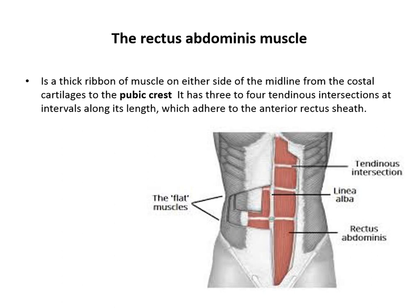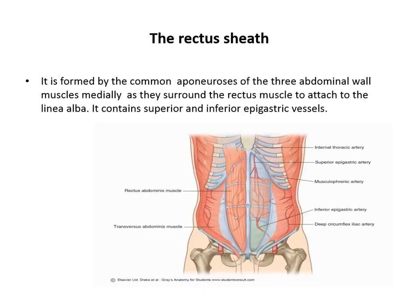The rectus abdominus muscle is a thick ribbon of muscle on either side of the midline, from the costal cartilage to the pubic crest. It has three to four intersections called tendinous intersections along its length, which adhere to the anterior rectus sheath. The rectus sheath is an aponeurosis formed by the three abdominal wall muscles medially, enclosing the rectus muscle and attached to the linea alba.